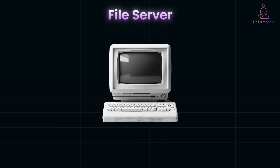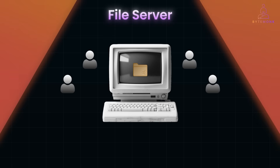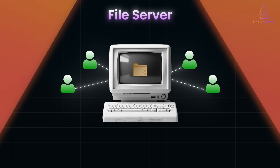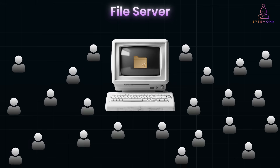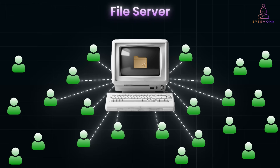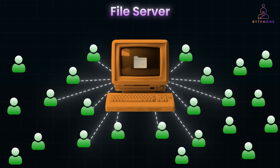At its core, a file server is a computer that stores and manages files, making them available to clients over a network. Imagine you have a shared folder on your office computer — anyone on the same network can open, modify, or save files in that folder. That's essentially what a file server does, but at a much larger scale. If too many people access it simultaneously or storage fills up, performance slows down and eventually the system fails.